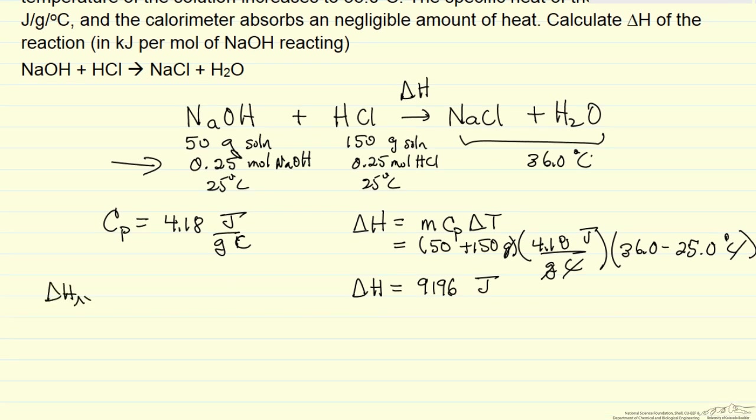So we want this heat of the reaction per mole, which is the delta H that we measured divided by the number of moles. So this is 9196 joules over 0.25 moles.